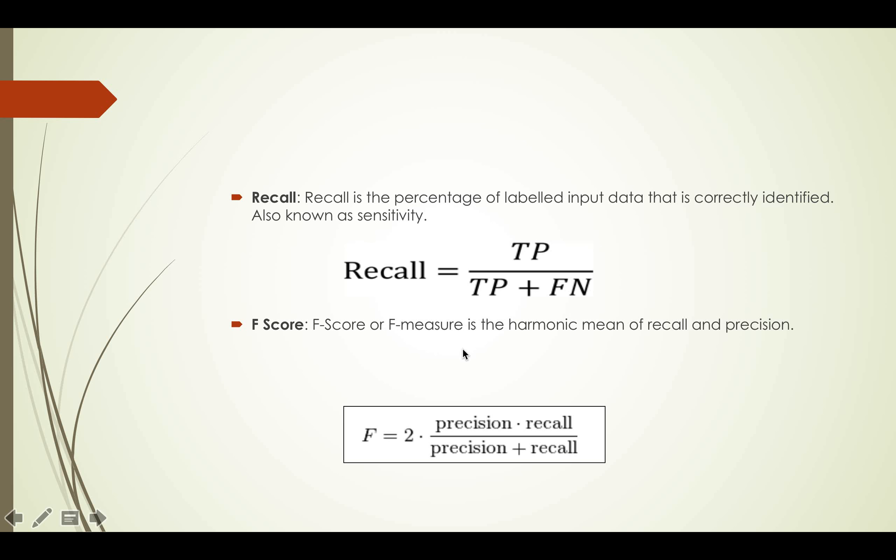F-score or F-measure is the harmonic mean of recall and precision. For sentiment analysis, F-score is one of the most important parameters.